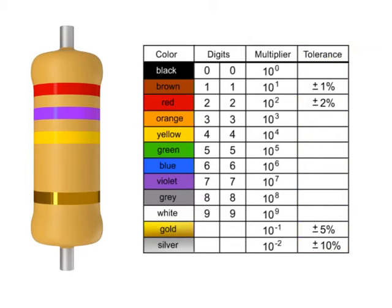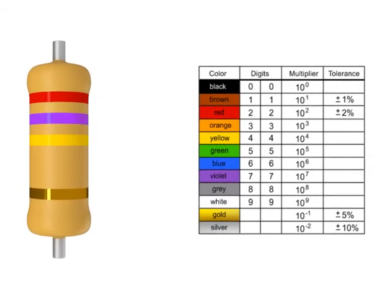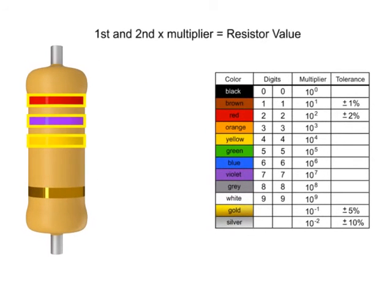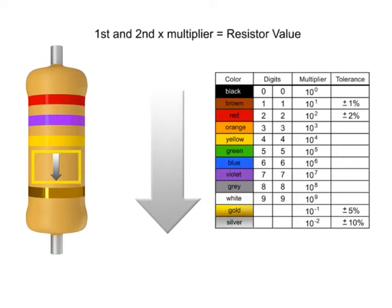You read resistor bands beginning with the end that has the most bands. A space between the third and fourth bands also indicates the reading direction.